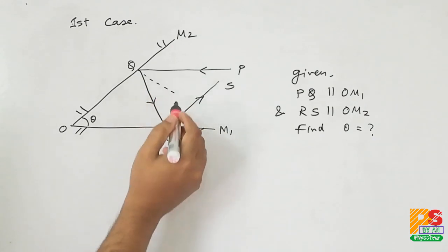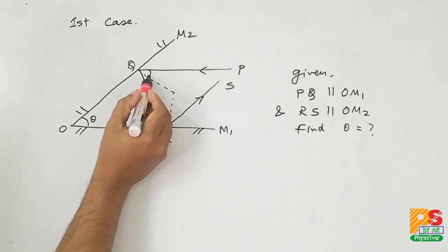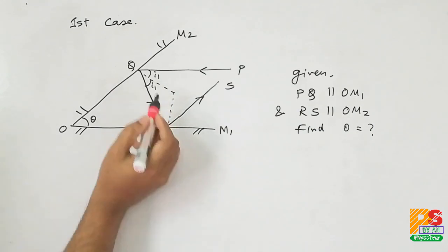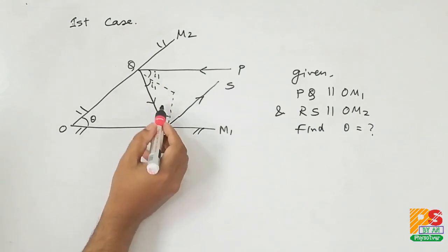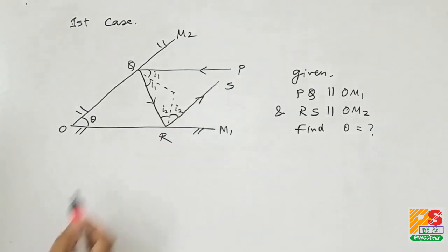Let's draw the normals. This is the angle of incidence I1. So the angle of reflection is also I1. And at point R angle of incidence is I2. So angle of reflection is also I2.